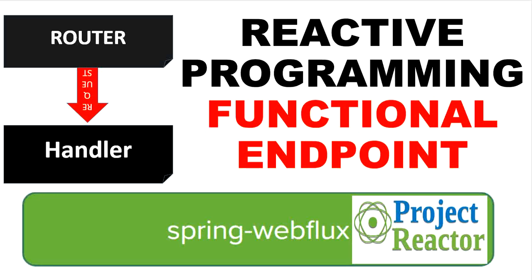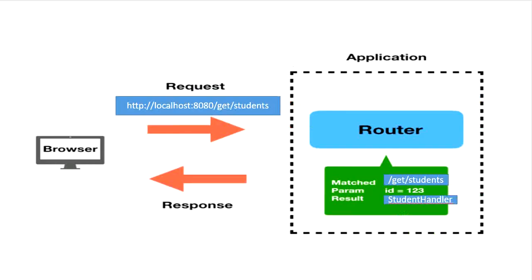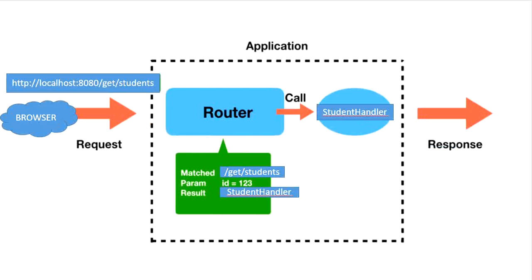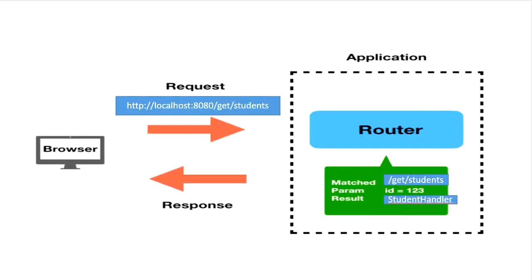Hello, welcome to this channel. Today in this video we are going to learn how to create a REST API using functional endpoints in reactive programming. In our previous video we already saw how to create a REST API using the annotation approach. In this approach we will create router classes and handler classes. Once the client sends a request, it goes to the router, and based on the appropriate URL it processes the request to the appropriate handler class, then the function executes and sends the response back to the client.